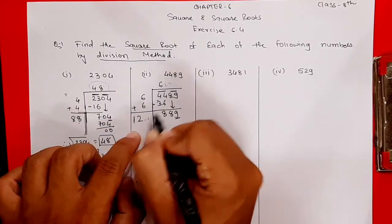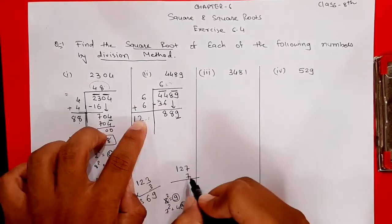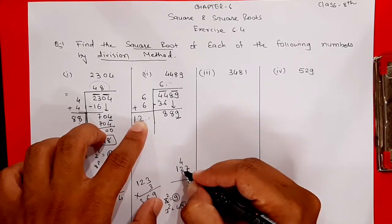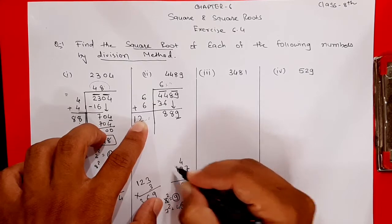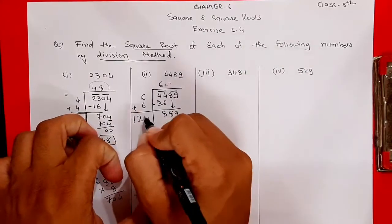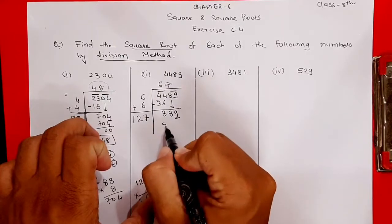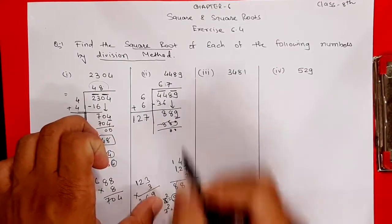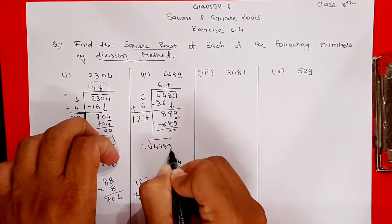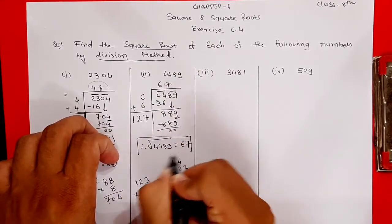Now try placing 7: number becomes 127, multiply 127 × 7. Seven sevens are 49, carry 4; two sevens are 14 plus 4 = 18, carry 1; one seven is 7 plus 1 = 8. So 127 × 7 = 889. Remainder is zero. Therefore the square root of 4489 is equal to 67. This is your answer.